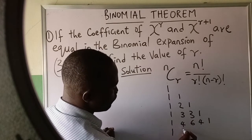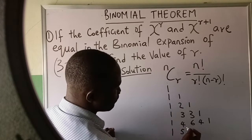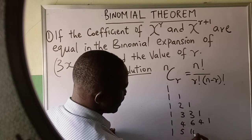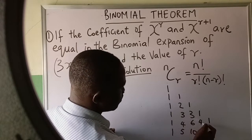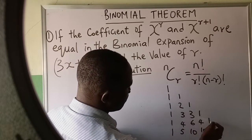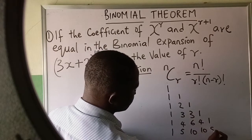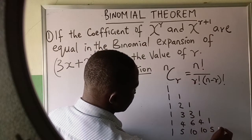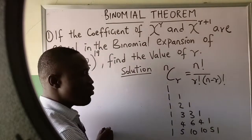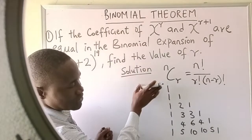Continuing: one plus four is five; four plus six is ten; six plus four is ten; four plus one is five; one plus zero — and you continue that way. You can see it gives us the shape of a triangle.